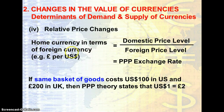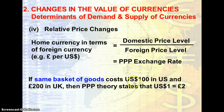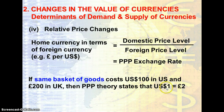The home currency in terms of foreign currency — i.e. pounds per US dollar — is given by the domestic price level divided by the foreign price level. This ratio between the domestic price level and the foreign price level is equivalent to the purchasing power parity exchange rate. So if the same basket of goods costs USD $100 in the US and £200 in the UK, the PPP theory states that USD $1 is equivalent to £2.